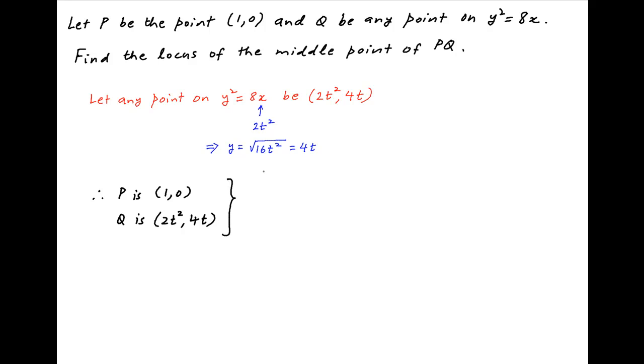Now, if we let the midpoint of PQ have the coordinates h,k, then h is equal to 1 plus 2t square upon 2 and k is equal to 0 plus 4t upon 2 which is equal to 2t and therefore t is equal to k upon 2.